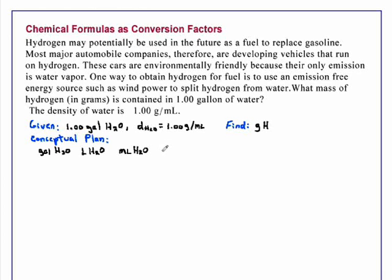Then we can employ the density to get grams of water. Now the relationship between grams of water and grams of hydrogen can be obtained by using the mole linkage. So we will convert the grams of water to moles of water. The formula of water will allow us to obtain moles of hydrogen. And once we know moles of hydrogen, using the molar mass of hydrogen, we can get grams of hydrogen.